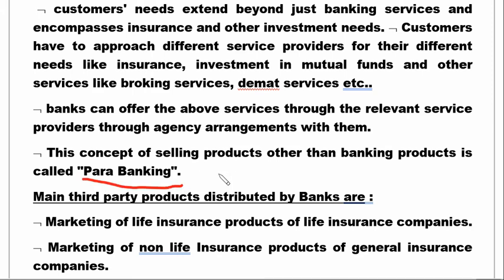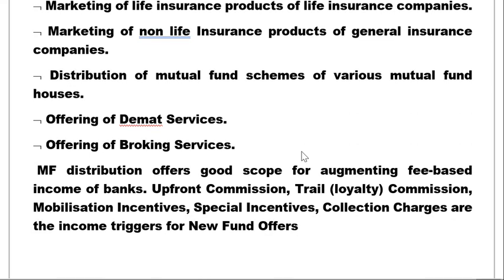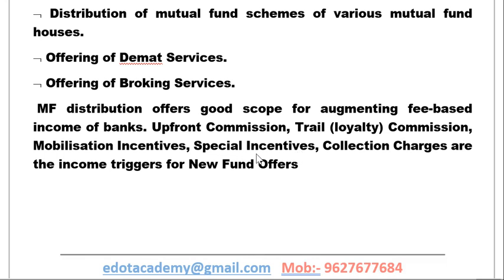The third-party products distributed by banks include: marketing of life insurance products of life insurance companies, marketing of non-life insurance products of general insurance companies, distribution of mutual fund schemes of various mutual fund houses, offering of demat services, and offering of broking services. Mutual fund distribution offers good scope for augmenting fee-based income for the bank.